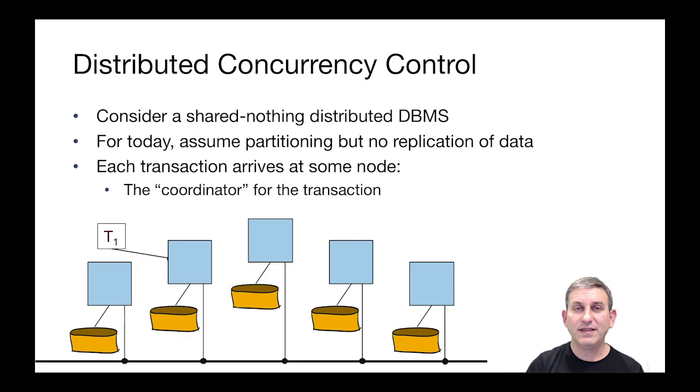Now, the transactions come in and they arrive at some node, so this transaction T1 here came in at the node that it's connected to, and that node will be appointed as the coordinator for that transaction. And you can set up your system so there's exactly one node that's the coordinator for all transactions, or you can set up a system where any node can be the coordinator for a given transaction. The point is, when the transaction comes in, it's assigned a single coordinator.